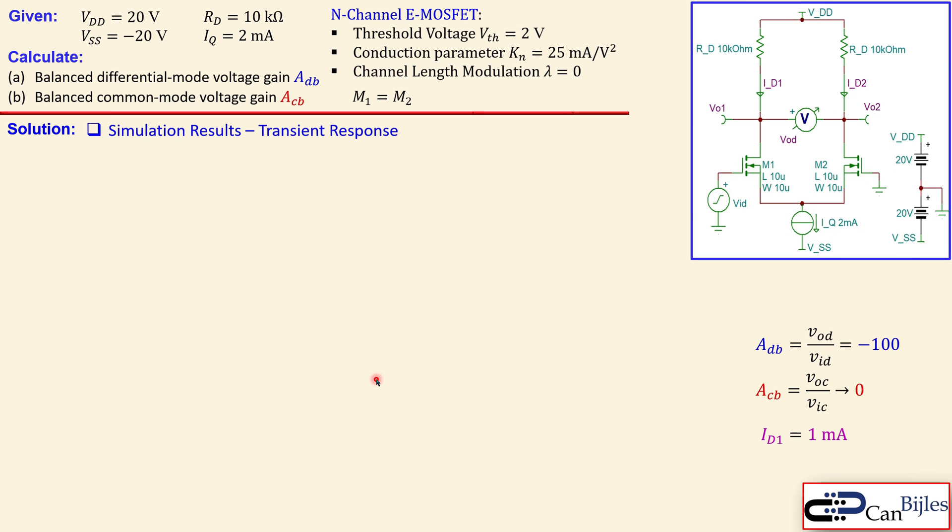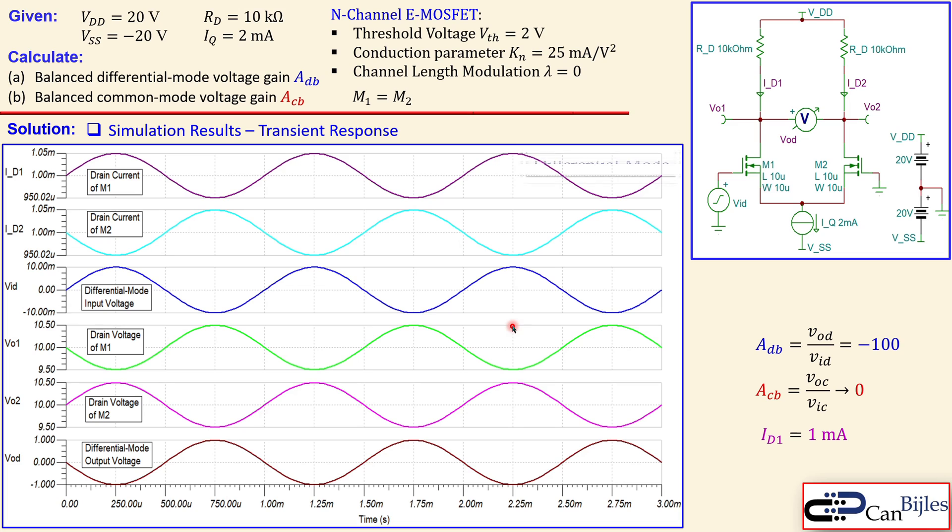Let's also look at the transient response, because we like to check the gains here. First the differential mode. What do we see? There are more plots here, but let's focus on the drain current first. VID, which is the differential mode input voltage, has a peak of 10 millivolts and has a frequency of one kilohertz. So this is a blue line, 10 millivolts peak, so 20 millivolts peak to peak.